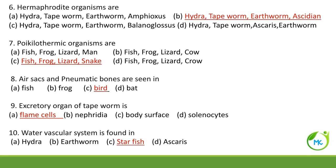Hermaphrodite organisms are — hermaphrodites are organisms that have both male and female sex organs in the same individual. So the hermaphrodite organisms are hydra, tapeworm, earthworm, and ascidian.